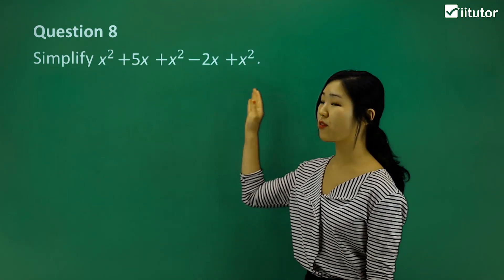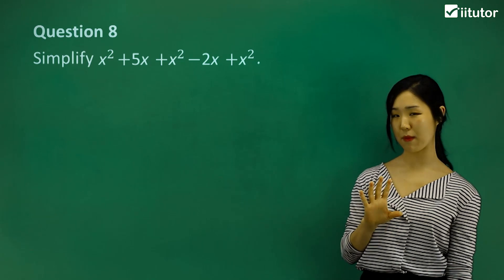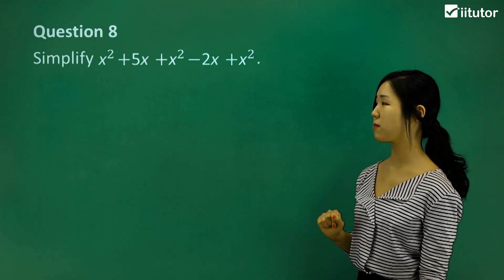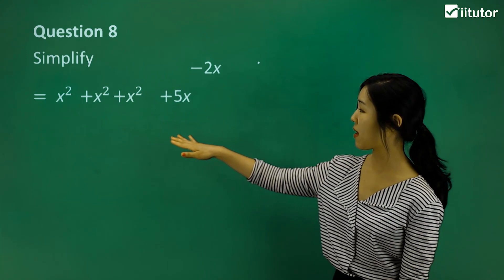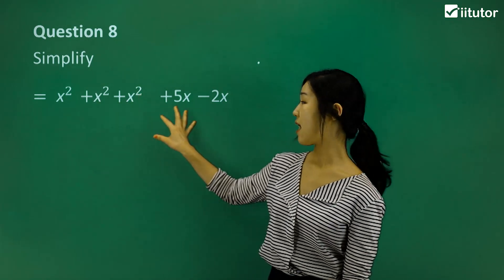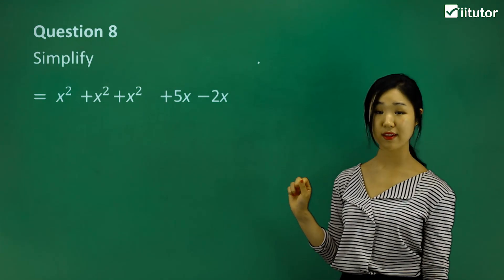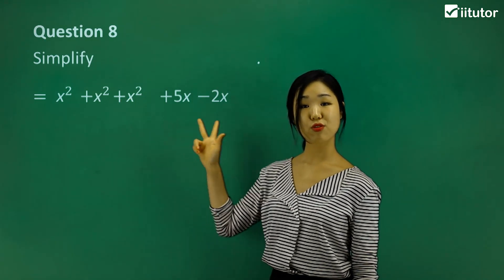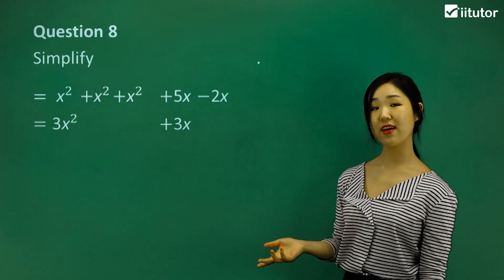Question eight: simplify this expression. Again, focus on grouping the like terms. I'll start with my x squares — group all the x squares together. Then the x's — group all the x's together. Remember: x squared and x are not like terms, they are completely different. x squared plus x squared plus x squared gives three lots of x squared, which is 3x squared. And 5x minus 2x gives 3x. So the final answer is 3x squared plus 3x — you cannot simplify any further because they are not like terms.